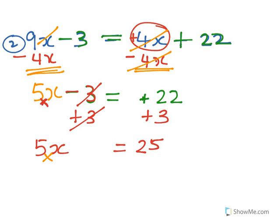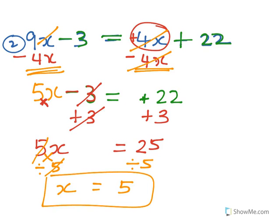And then you've got times 5, so you go divide by 5, divide by 5, the 5's go out, 25 divided by 5 is 5.